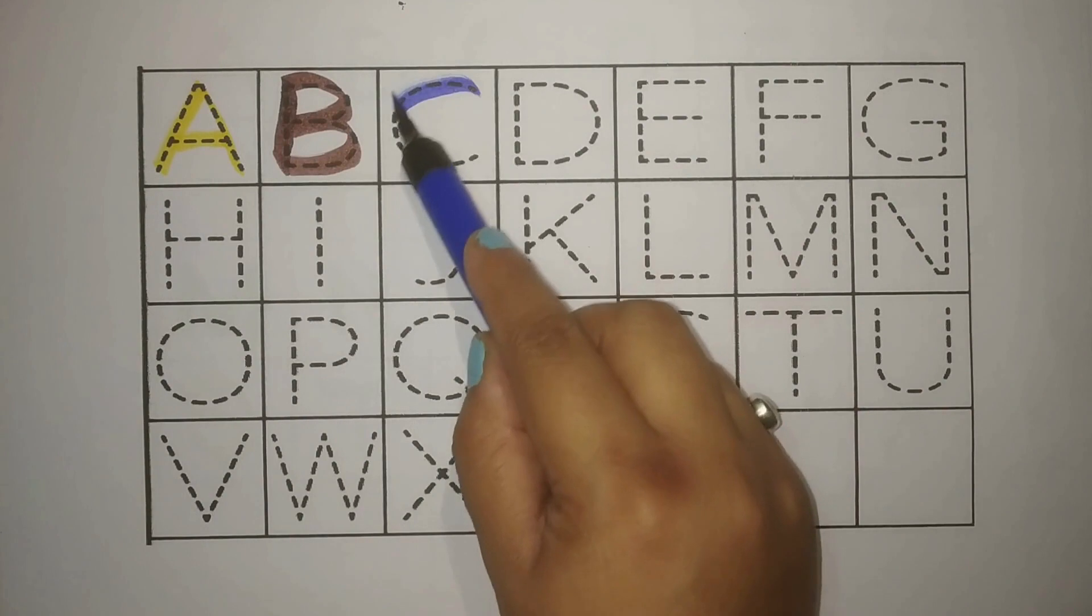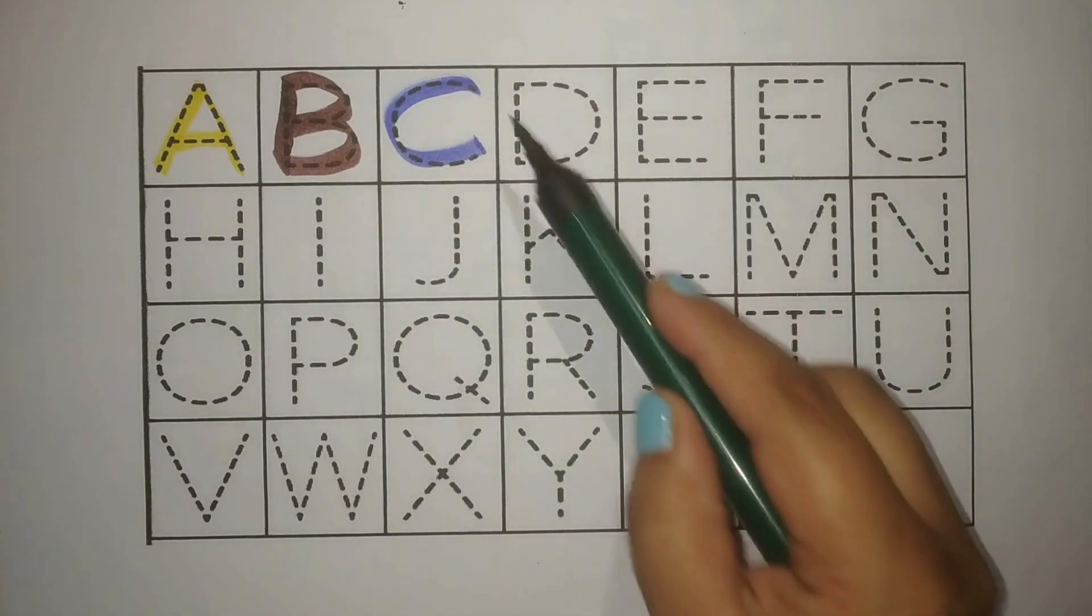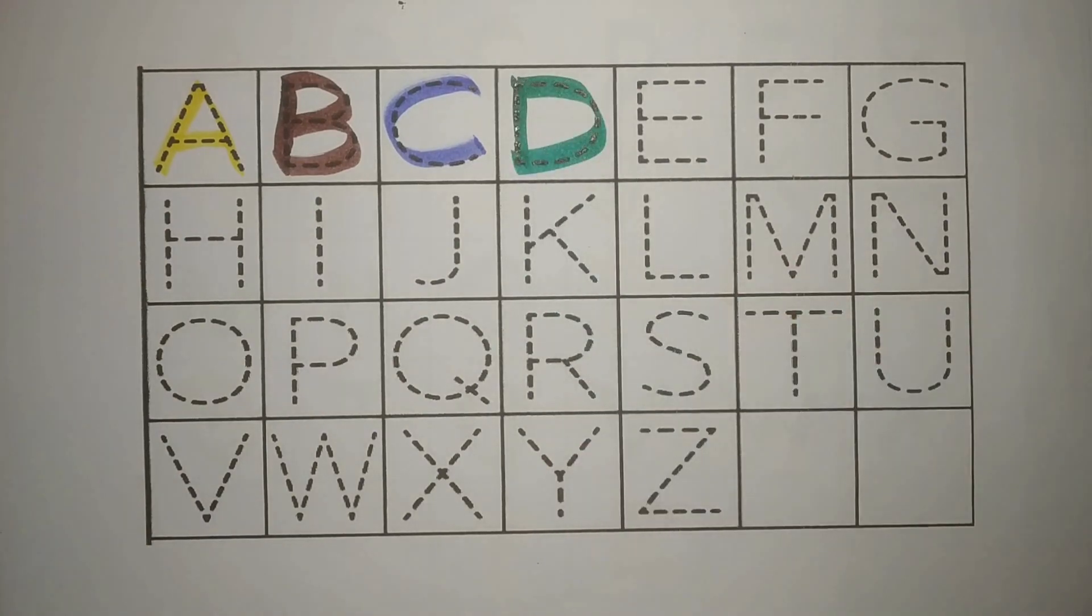Blue, C, C for cat, billy, meow, meow. Green, D, D for donkey, gadha, day to day to.